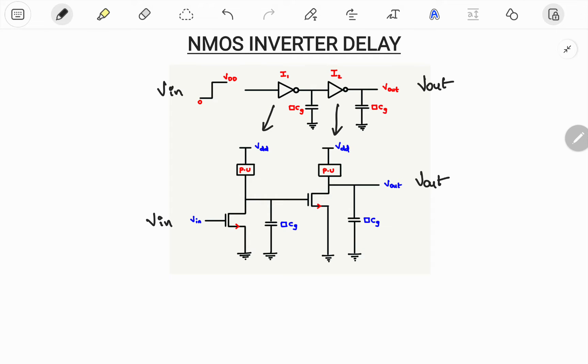Now we have to analyze the working of it by applying different inputs. So there are only two inputs present, that is you can apply Vin equals 0 or else you can apply Vin equals 1. You can consider this as 0 volt, this one as 5 volt. If you want you can write it as VDD also.